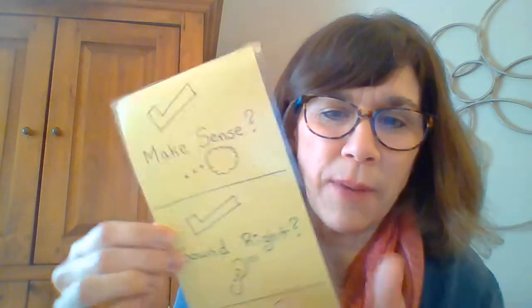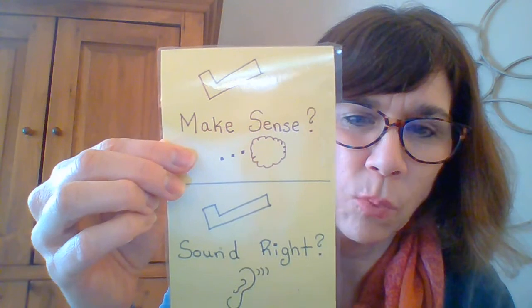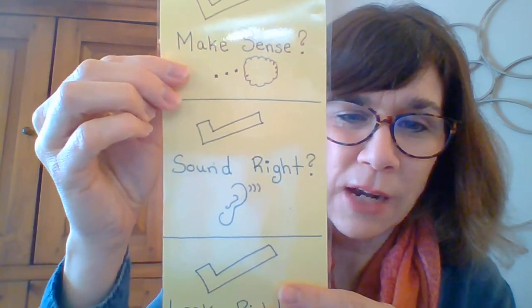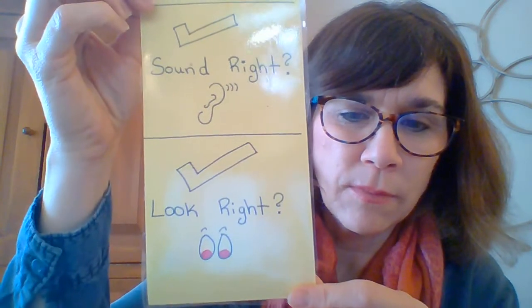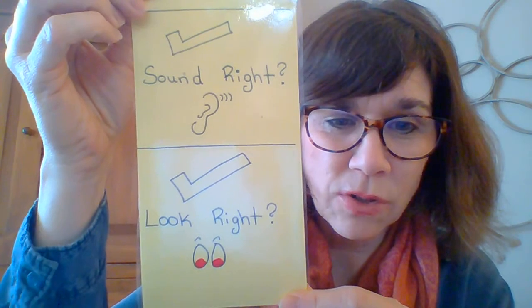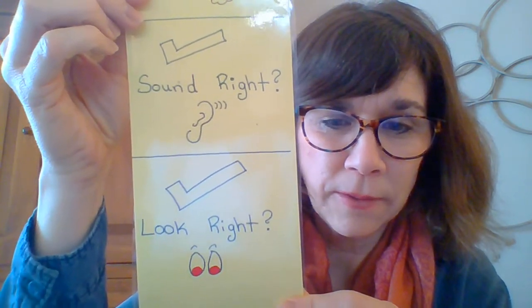Today when we read our story we're going to think about two things that readers do. First, when readers are looking at tricky words and trying to solve tricky words, we think about: what would make sense? Does it sound right? And does it look right — does the word we said match the letters on the page? The other thing we're going to practice today is retelling. We're going to practice retelling our story across our fingers.